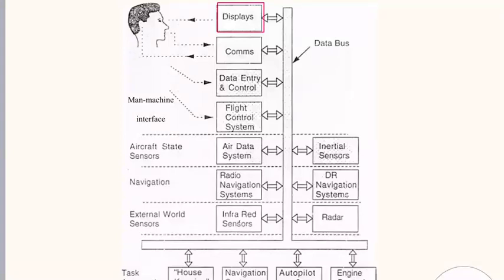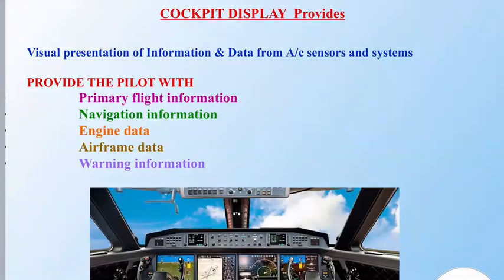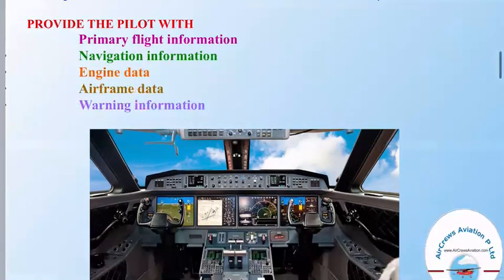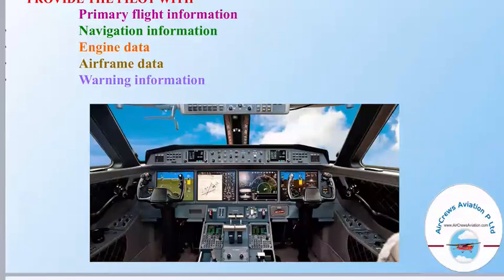The first avionics component we will look at is cockpit displays. The cockpit display basically provides a visual presentation of information and data from the aircraft sensors and systems. It also provides the pilot with primary flight control information, navigation information, engine data, airframe data, as well as warning information. All the electronics embedded into a cockpit are dependent on avionics, with different instruments used for different purposes. This cockpit shown is from a civil aircraft.